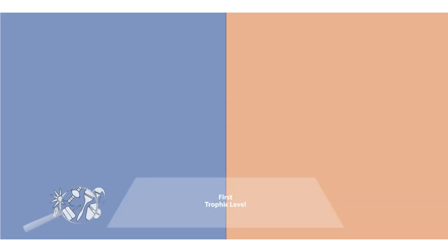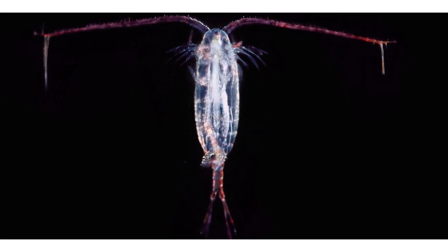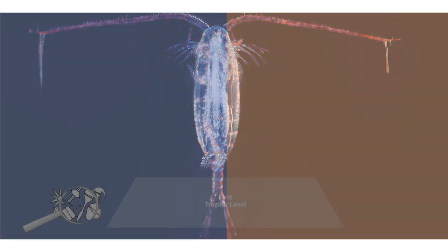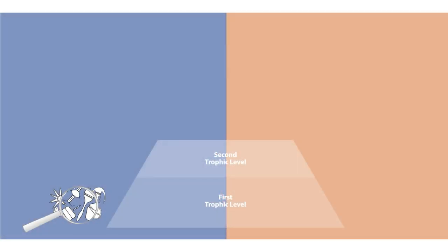Through the process of photosynthesis, as we know it from land, these tiny plants build up organic matter that can then be consumed by secondary consumers — the cows of the sea — tiny crustaceans called copepods. Since the plants with which the food web starts are very small, the first consumers also have to be quite small.